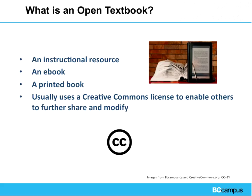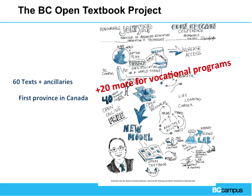So what is an open textbook? It's an instructional resource — it can be an e-book, a printed book, an HTML file, or an XML file — but ultimately it uses a Creative Commons license to enable others to further share and modify. And that's really key when we're talking about open textbooks.